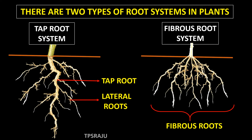Students, already we learned that there are two types of root systems in plants. One is tap root system and another one is fibrous root system. We observed that in our surroundings, some plants have tap root system and some plants have fibrous root system. By doing a small activity, we are going to know which plants have tap root system and which plants have fibrous root system.